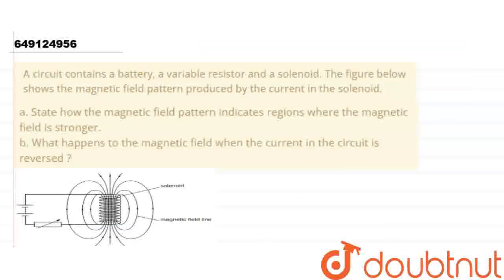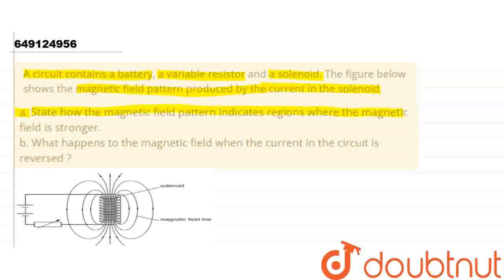Hello friends, so the question is: a circuit contains a battery, a variable resistor and a solenoid. The figure below shows the magnetic field pattern produced by the current in the solenoid. Part A says: state how the magnetic field pattern indicates the region where the magnetic field is stronger.